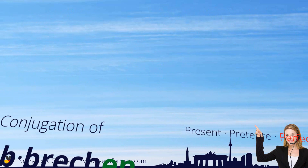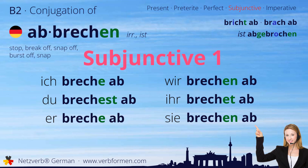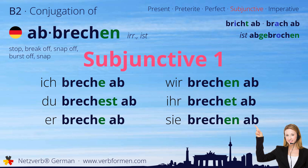Next up is the subjunctive one: ich breche ab, du brachst ab, er breche ab, wir brechen ab, ihr brechet ab, sie brechen ab.